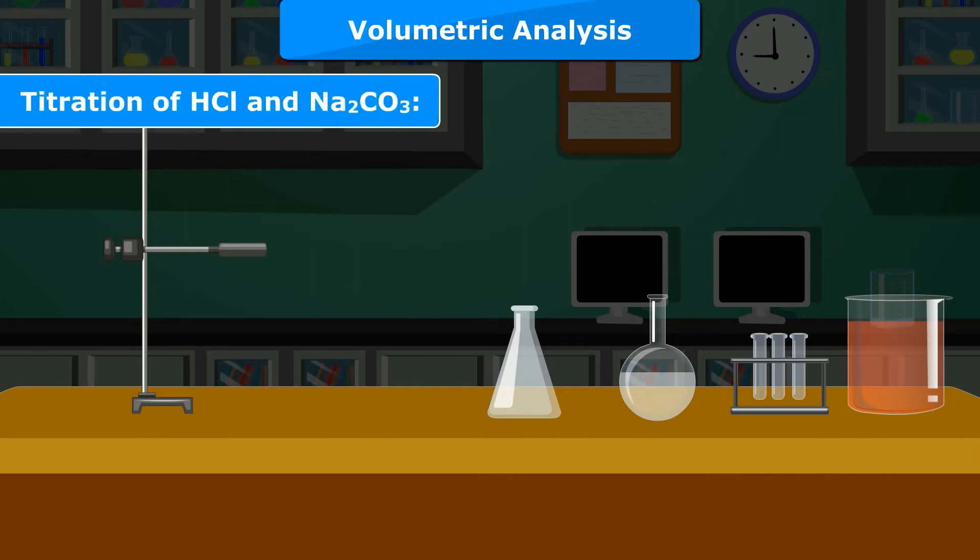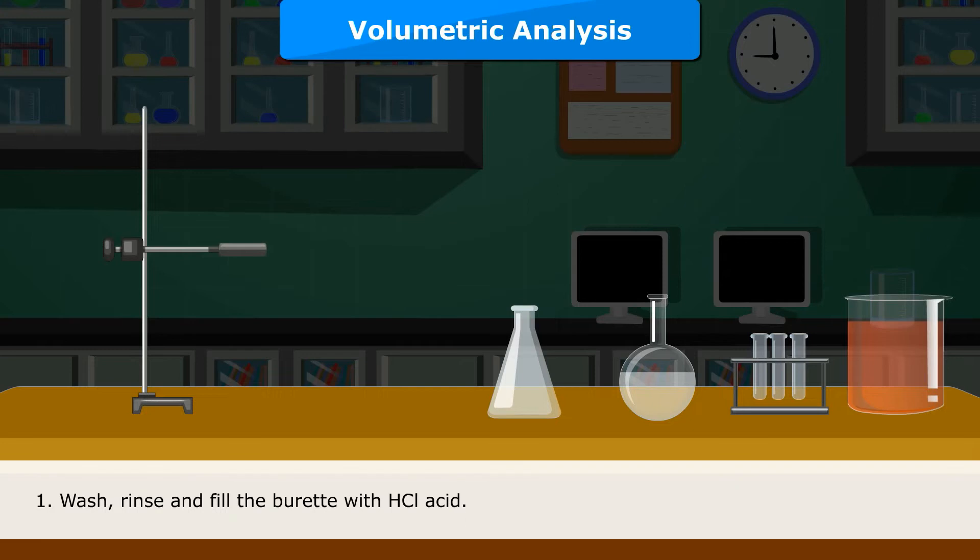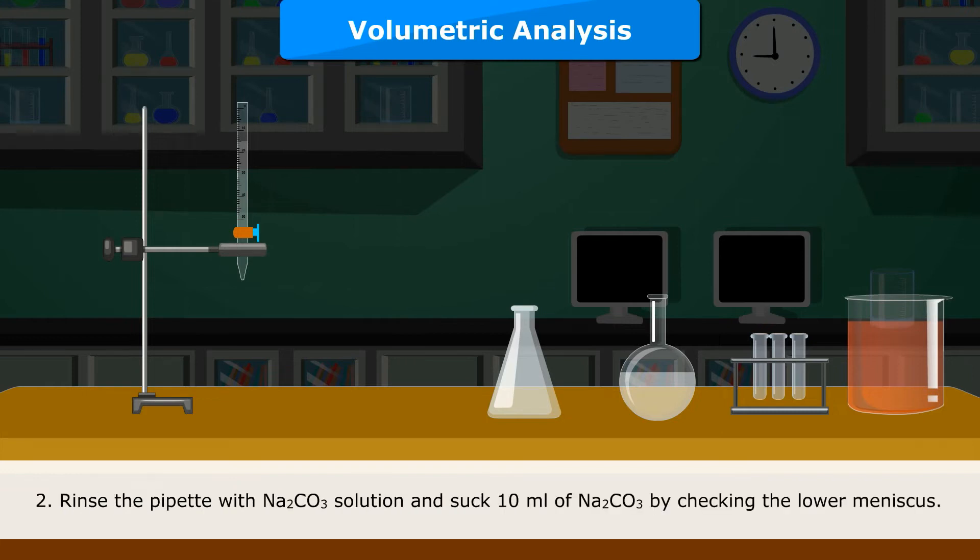B. Titration of HCl and Na2CO3. Wash, rinse and fill the burette with HCl acid. Rinse the pipette with Na2CO3 solution and suck 10 ml of Na2CO3 by checking the lower meniscus.